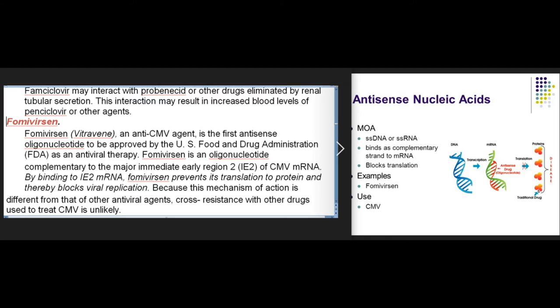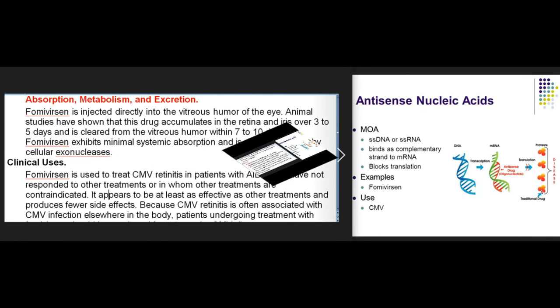Fomivirsen (Vitravene) is an anti-CMV agent and the first antisense oligonucleotide approved by the FDA as an antiviral therapy. Fomivirsen is an oligonucleotide complementary to the major immediate early region 2 (IE2) of CMV mRNA. By binding to IE2 mRNA, fomivirsen prevents its translation to protein and thereby blocks viral replication. Because this mechanism of action is different from that of other antiviral agents, cross-resistance with other drugs used to treat CMV is unlikely. Fomivirsen is injected directly into the vitreous humor of the eye. Animal studies have shown that this drug accumulates in the retina and iris over 3 to 5 days and is cleared from the vitreous humor within 7 to 10 days. Fomivirsen exhibits minimal systemic absorption and is degraded locally by cellular exonucleases.